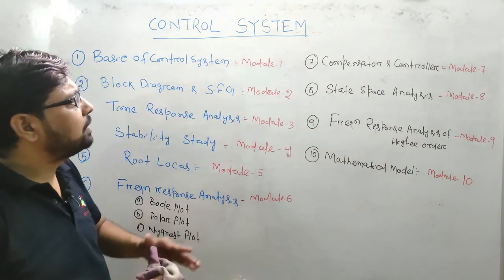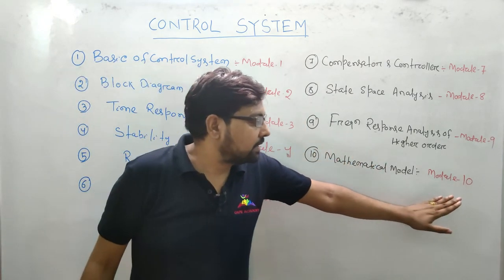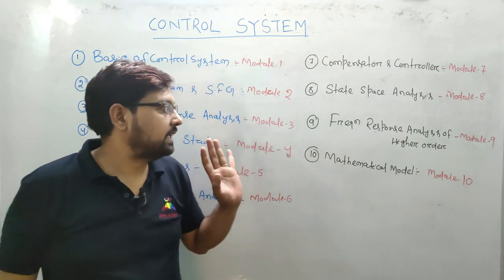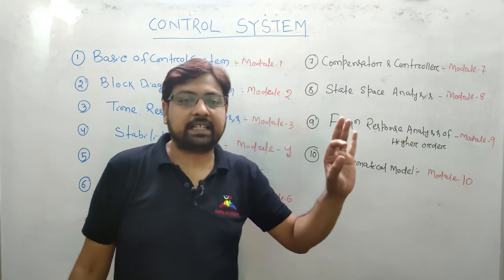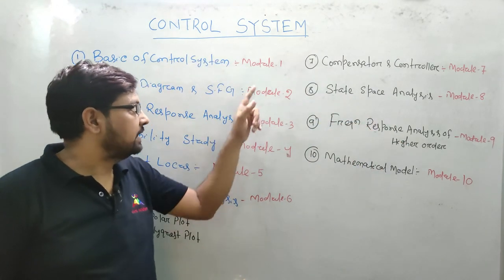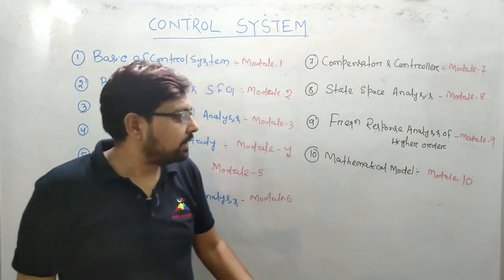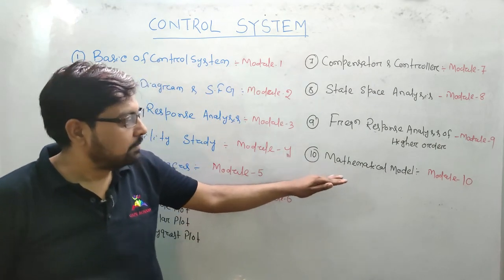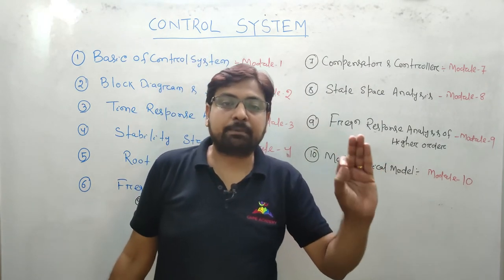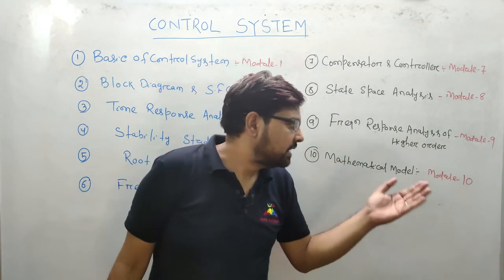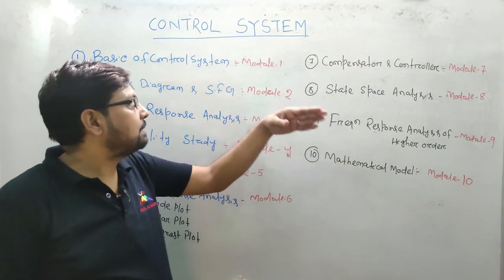पूरा Control System को हम लोग Module 1 से लेके Module 10 में खत्म करेंगे. Module 1 से Module 10 खत्म करने के लिए हमको लगेंगे 60 से 80 hour. Module 1 से Module 9 तक - Instrumentation, Electrical, EC - इन तीनों branch के लिए पूरा important है. लेकिन जो Module 10 है मेरा - Mathematical Model - ये specifically मेरा Electrical वालों के लिए है. EC और Instrumentation में ये Mathematical Model इतना ज्यादा important नहीं है.